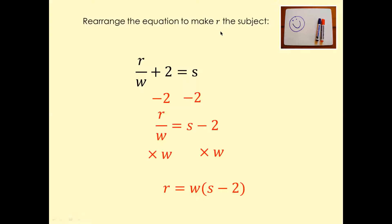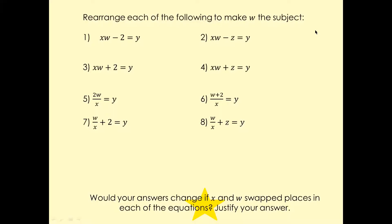This one is interesting — we want to make R the subject. First cancel plus two by doing minus two on both sides, which gives R over W equals S minus two. Now cancel W by multiplying both sides by W — the W cancels — and you're left with R equals W times (S minus two).